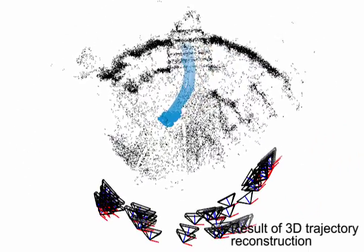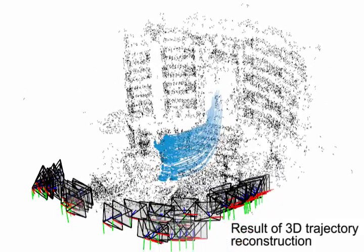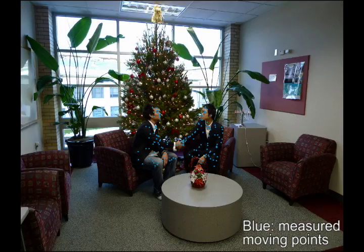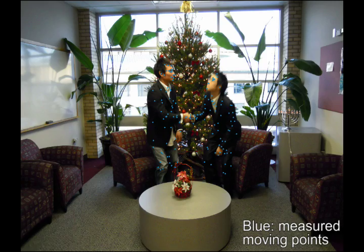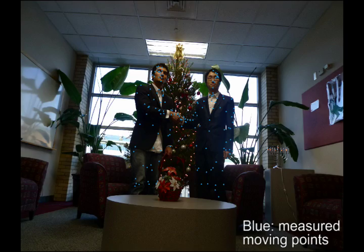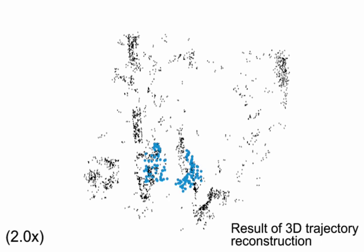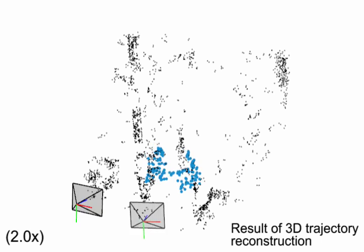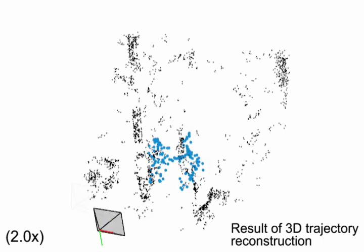Input photos from the portrait dataset. The 3D path taken by the dynamic structure. The reconstruction result.